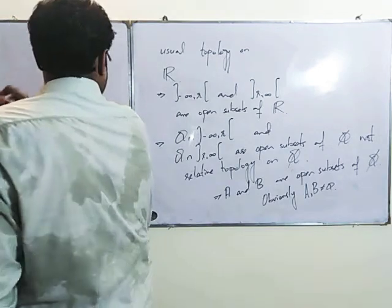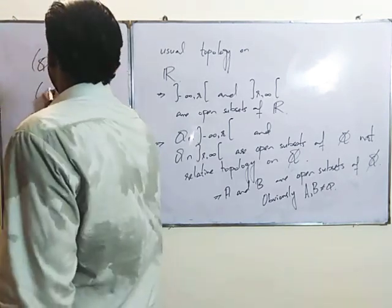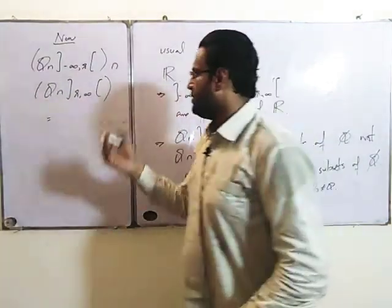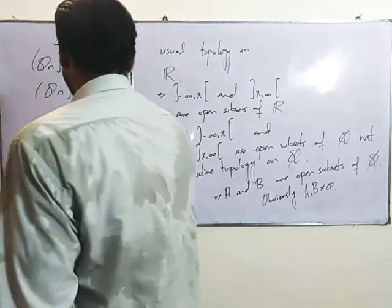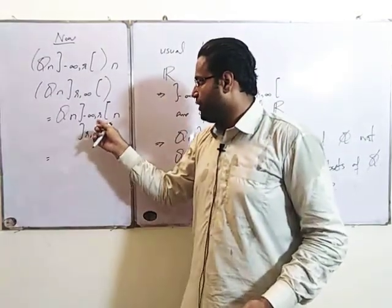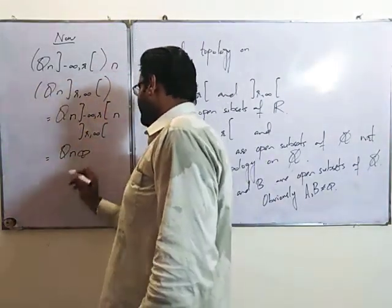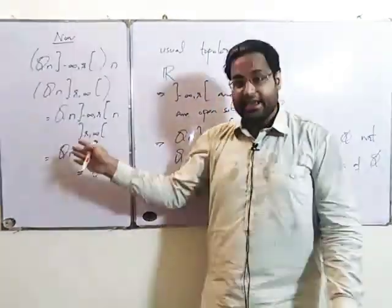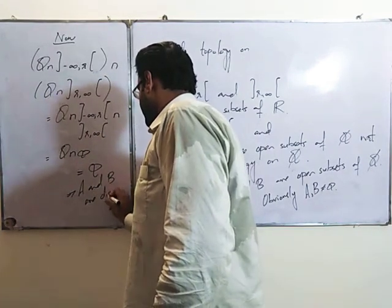Now, Q ∩ (−∞, r) intersection Q ∩ (r, +∞) — agar aap in dono ki intersection lein, to dono intervals mein kuch bhi common nahi hai, kyunki jahan split ho raha hai us point ko chhod ke aage se start ho raha hai. Beech mein kuch bhi common nahi — in dono ki intersection empty ho gayi. Iska matlab A and B are disjoint.